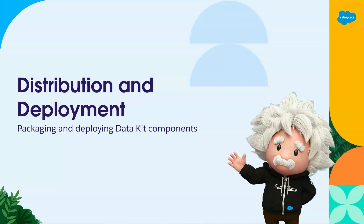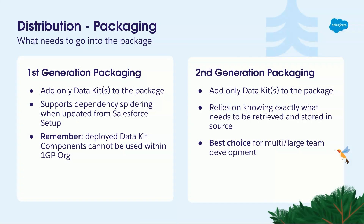Now that we have our package, we want to distribute it. There is one golden rule which applies to both first-generation and second-generation packaging: you can only put data kit components into those packages. Full stop. You can't put Apex in there. You can't put custom objects in there. This is really strict.